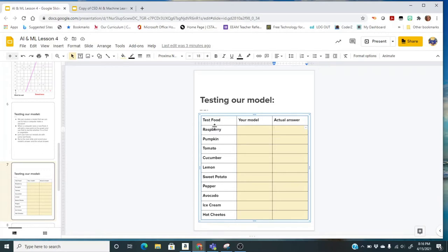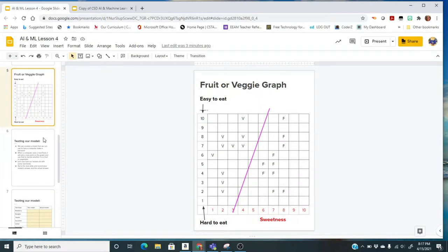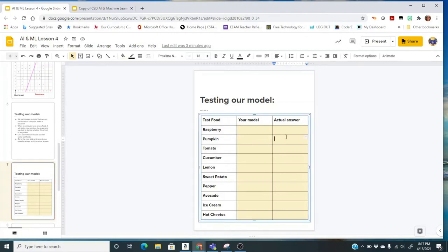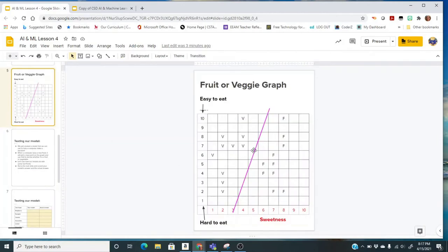We're going to go through the next slides together. You can stay here on your assignment and type in what your model suggests. You're going to have to go back and forth between your graph and this page in your document so that you can type in what your model says and what the actual answer is. This is where you're going to fill out your answers, because your chart might be different from mine.